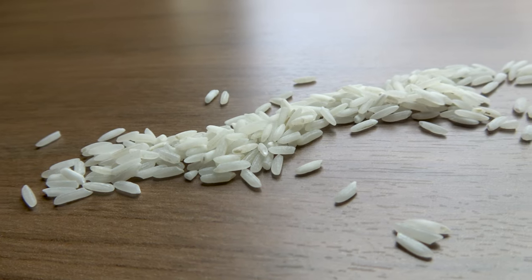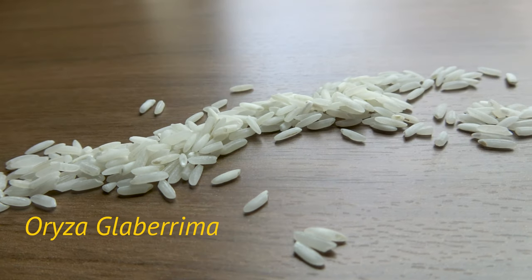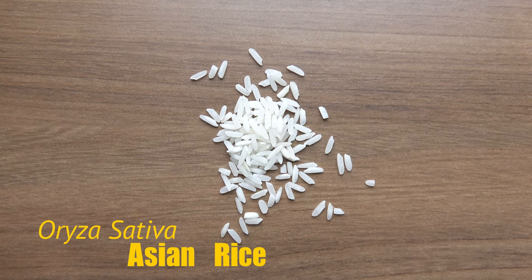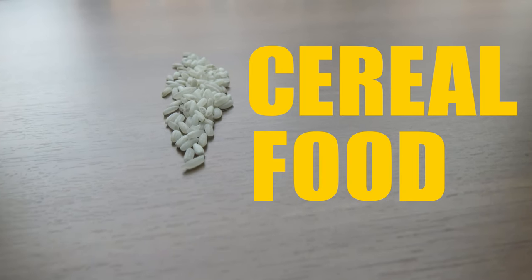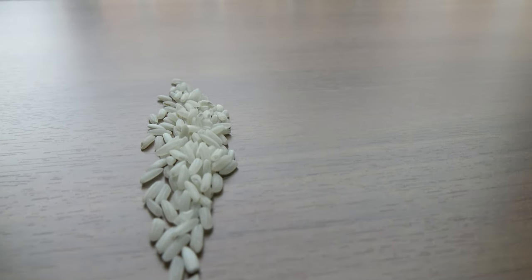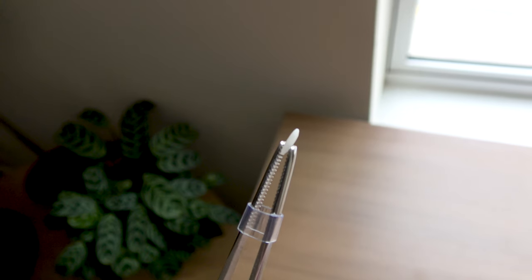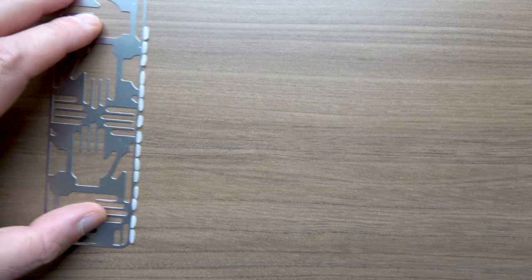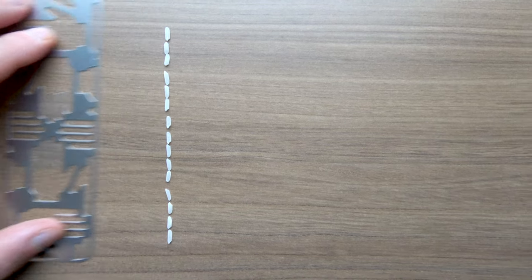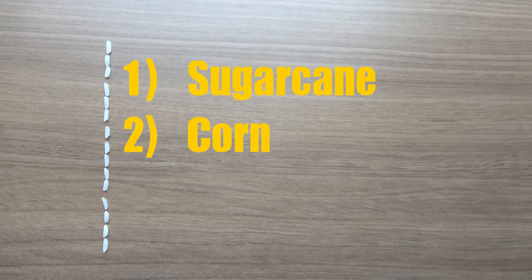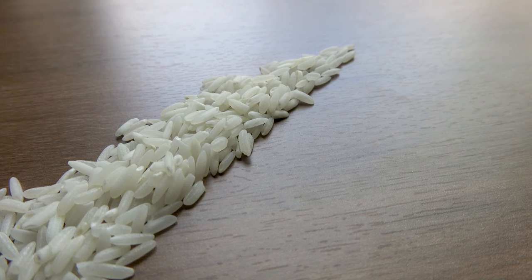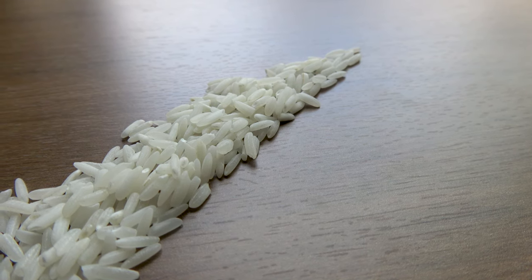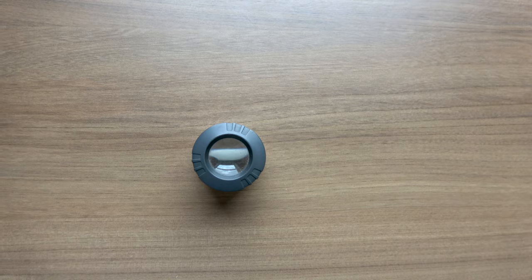Rice is the seed of the grass species Oryza glaberrima or Oryza sativa. It is a cereal food, meaning the edible parts of any grass, the grain. It is the agricultural commodity with the third highest worldwide production, after sugarcane and corn. But I'm not going to focus on rice's origins and impact on human population today. Rice is just the subject of today's experiment.